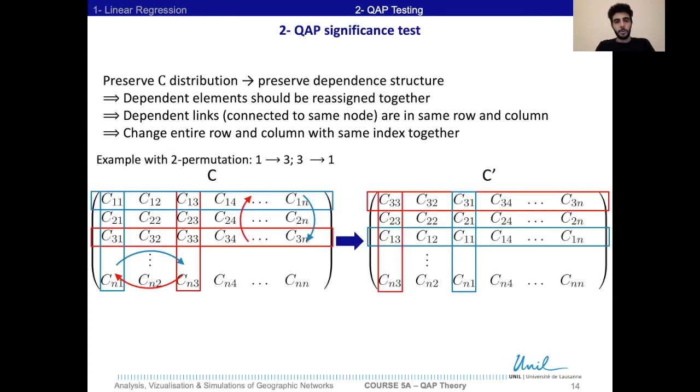Here we have an example with a simple two-permutation. So one goes on three, and three goes on one. We have to say here that these don't have necessarily to be reflexes. So three doesn't have to necessarily go on one if one goes on three, but here, in this simple case, it's just an illustration. And then we see that the column and the row three have to be permutated together. So the column three would go on the column one, and then the row three would go on the row one, and vice versa. And then we would obtain this matrix as C'.